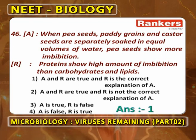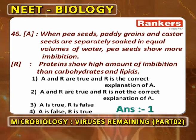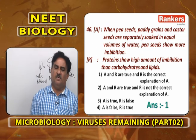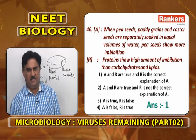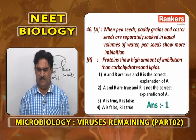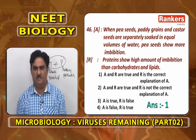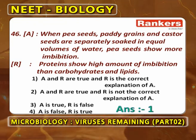A and R are correct. R is the correct explanation of A, because proteins show maximum imbibition compared to any other food substance, whether carbohydrate or lipid. Based on that, this assertion reasoning is given. First option.